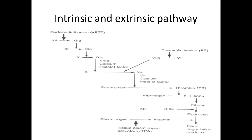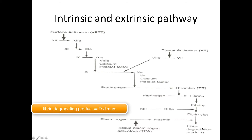After there has been a regeneration of the subendothelial area, another protein is released called tissue plasminogen activator. The tissue plasminogen activator takes a circulating protein called plasminogen and converts it into plasmin. Plasmin then degrades fibrin into fibrin-degradation products.